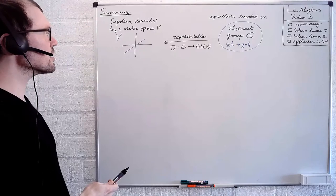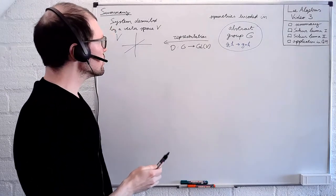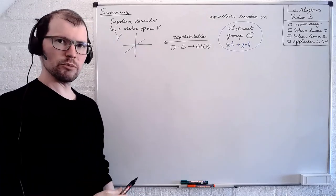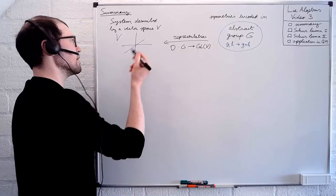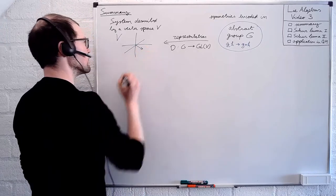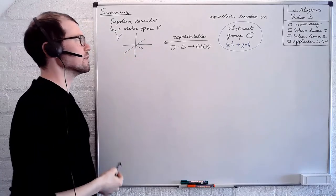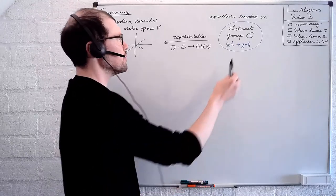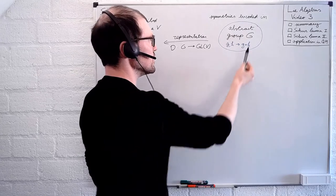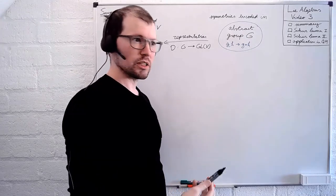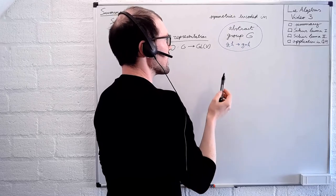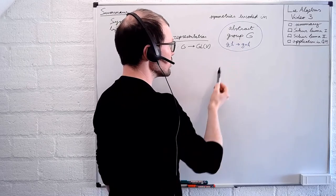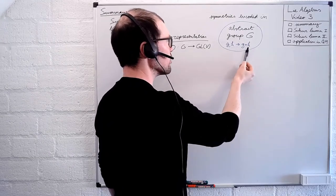Let's start with a quick summary. Last time we saw that whenever we have a physical system described by a vector space — meaning every state in the system corresponds to some vector in a linear space V — and if this physical system has some symmetries, it means there is some abstract group G that captures the transformations under these symmetries, or in particular, it captures the algebraic properties of these transformations: how two such symmetry transformations compose into a third one.